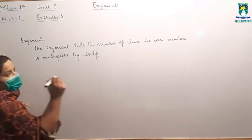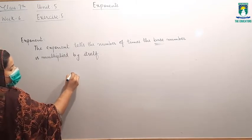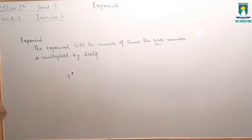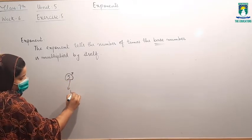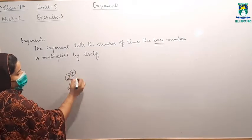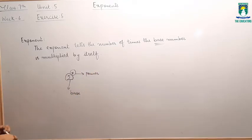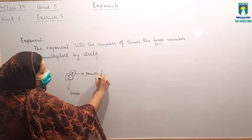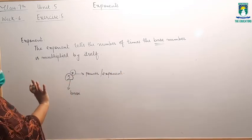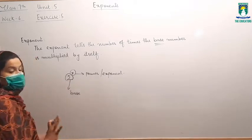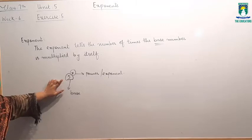Now, what do you mean by the base number? If I write 5 raised to power 3, so आपके पास ये जो 5 है, ये base होगी, और ये जो 3 है, ये power होगी. Power को आप exponent भी कहते हैं. 3 को चाहे आप power कहें, चाहे exponent कहें, these are the same thing. And its base is 5.